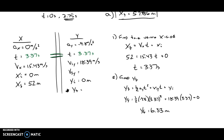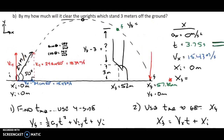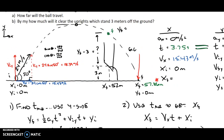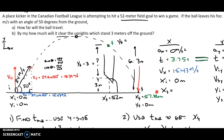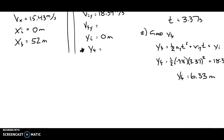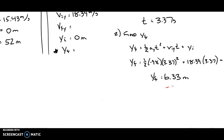To answer the question — and because we drew a picture, it's really helpful to see — if this total height is 6.33 meters, then subtracting the height of the goal post (Y final minus 3) gives us 3.33 meters above the goal post.